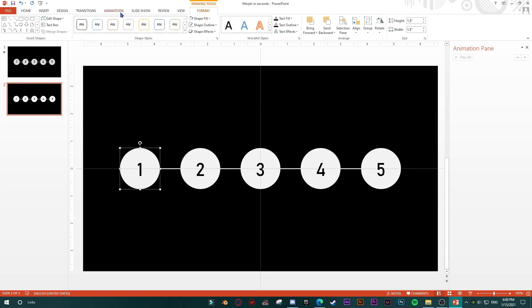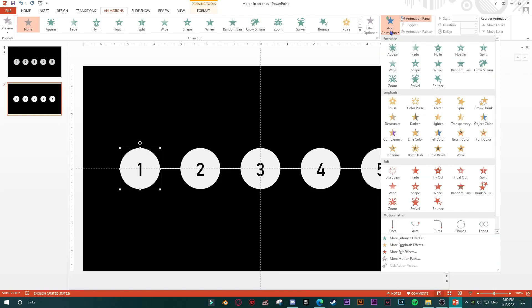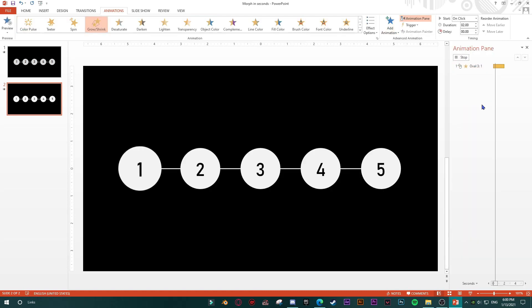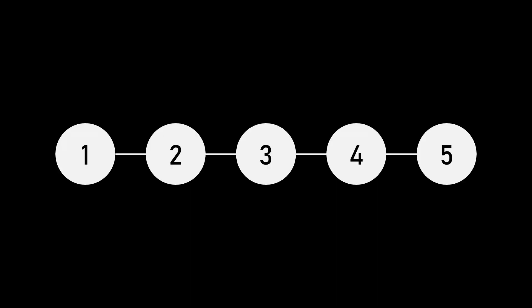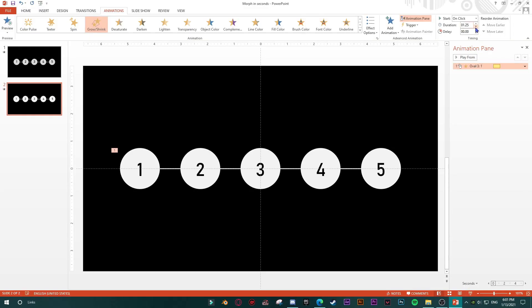For every shape, go to the Animation tab, open the Animation Pane. For the first shape I'll apply the Grow and Shrink animation — just that one, nothing more. It should start on click. The default duration is two seconds, but that's too slow, so I'll resize the duration to 0.75 seconds.